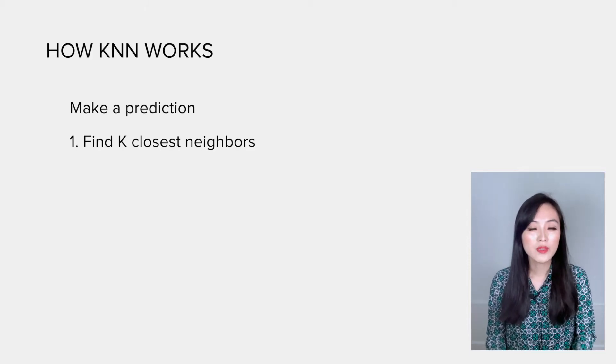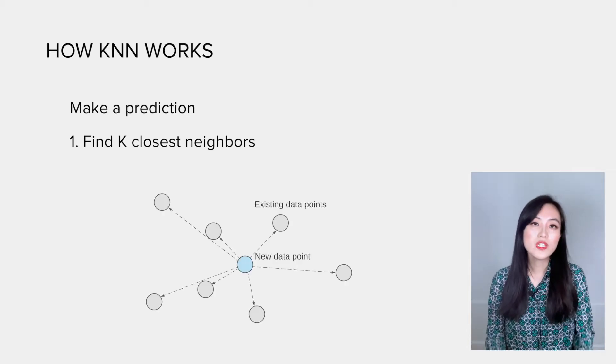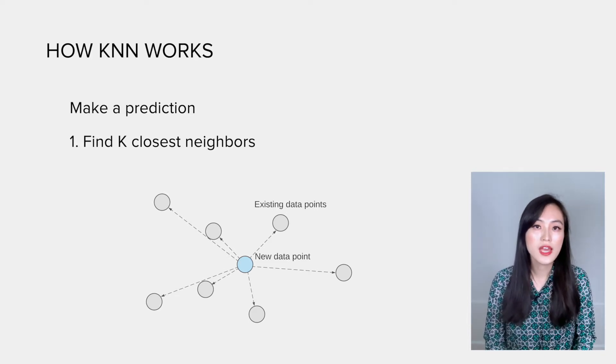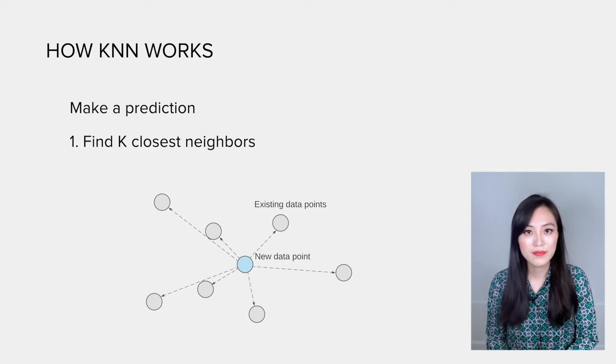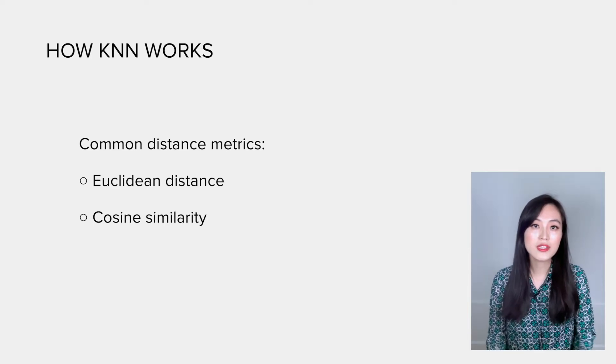Now let's look at how it works. To make a prediction of a new data point, we first need to find its k closest neighbors from the data set. To find which data points are the closest neighbors, we need to measure the distance between the new data point and all existing data points. Common distance metrics include Euclidean distance and cosine similarity.